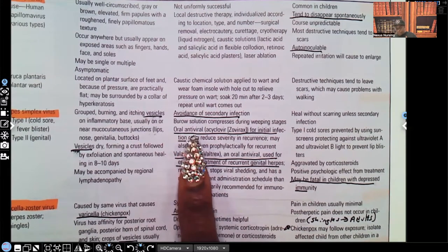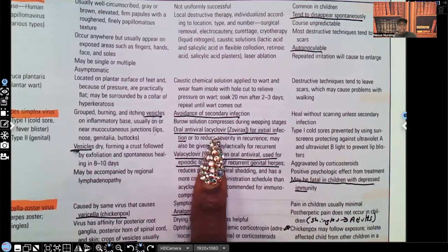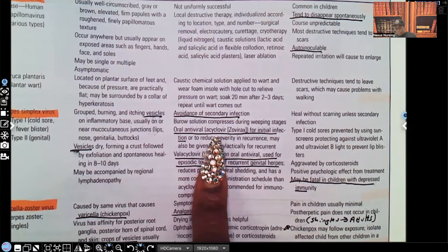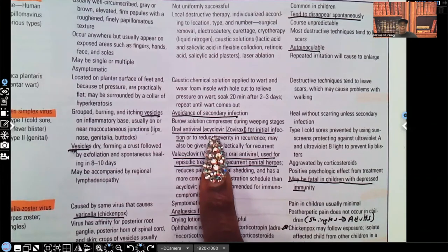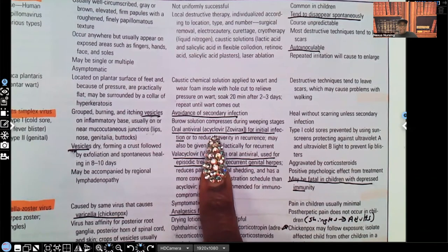Oral antiviral such as acyclovir for virus. For initial infection, make sure you're familiar with and you recognize the acyclovir because usually that's the medication that is the drug of choice that when you get a test question they'll ask you about when it comes to the herpes simplex.